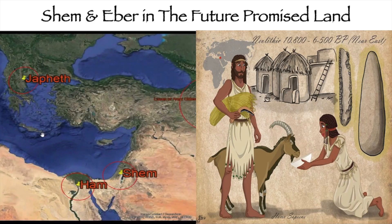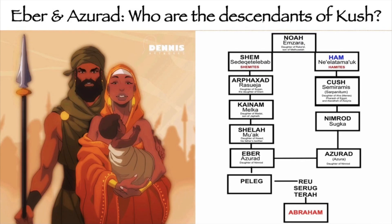We conclude this video on Shem and Eber in the future promised land. Our next episode covers Eber and Azurad who are the descendants of Cush. Don't forget to like and subscribe, and leave a comment if you have any questions concerning the topic of this video and series. Have a great day.